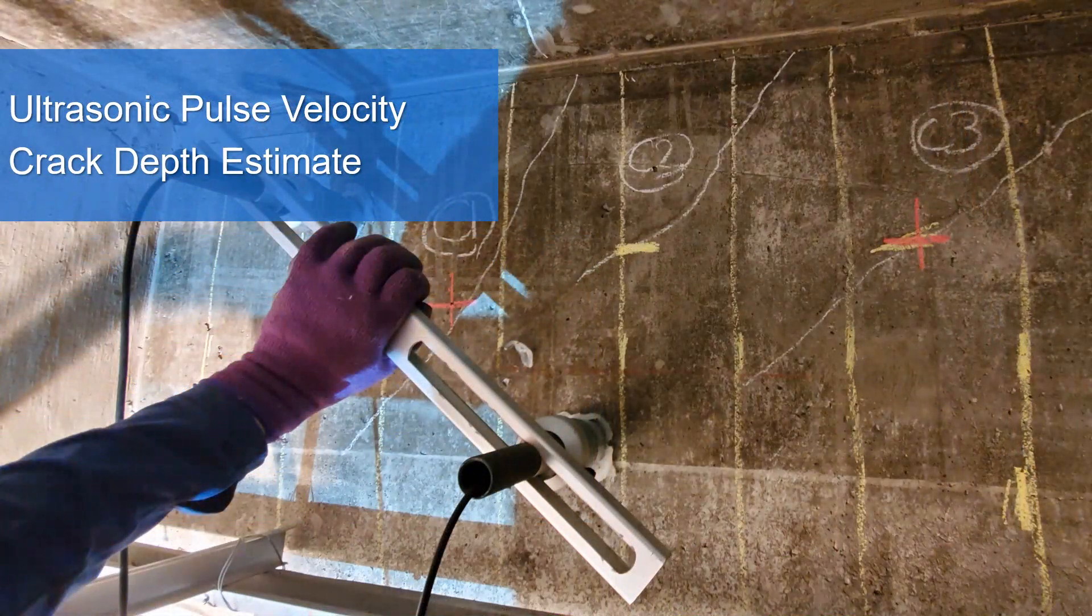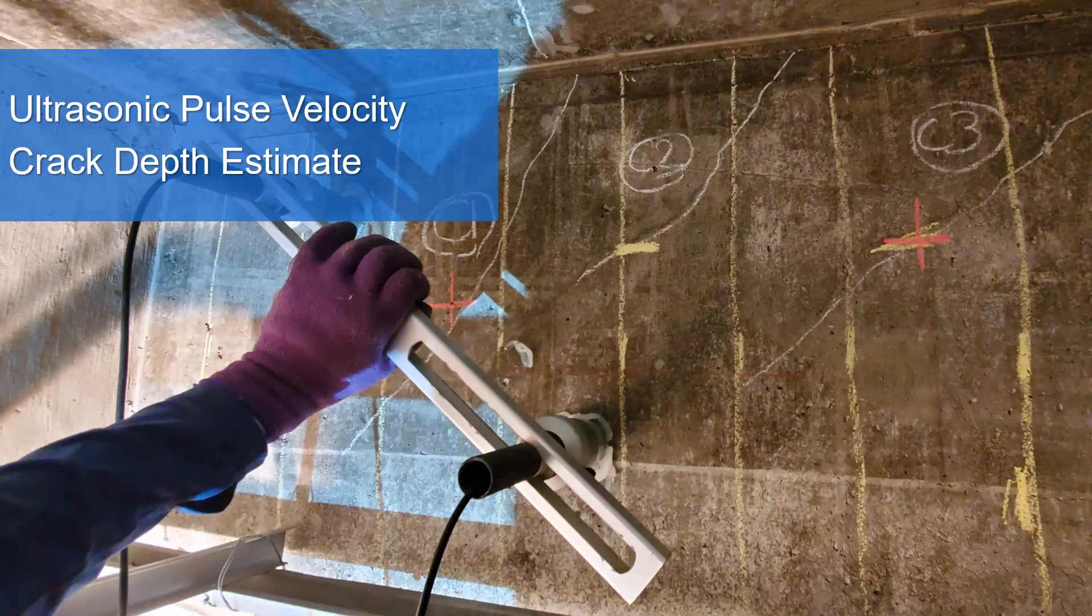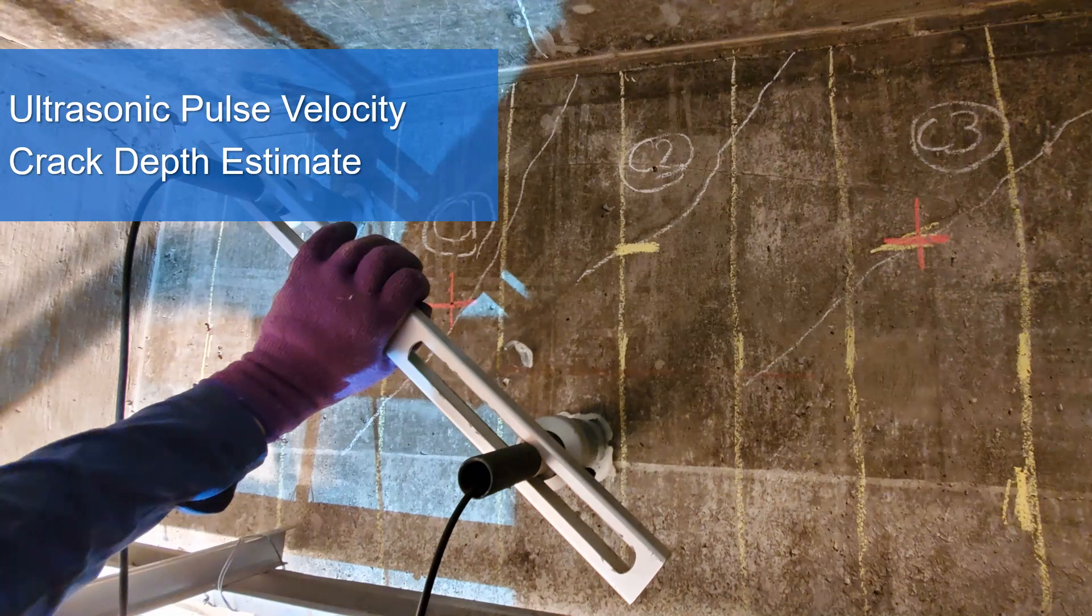Crack depths, on the other hand, can be used to study the structural integrity and durability performance of a concrete beam. One simple NDT method for estimating the crack width is the ultrasonic pulse velocity or simply UPV.